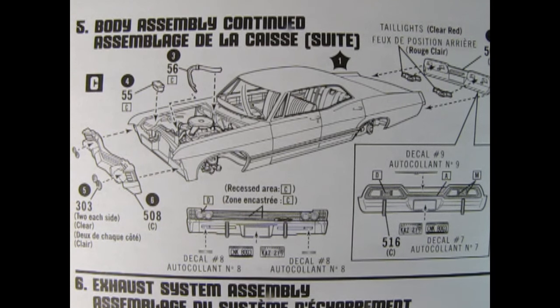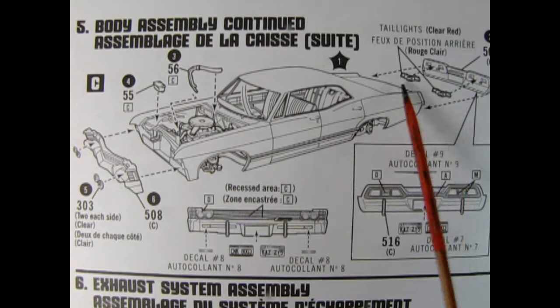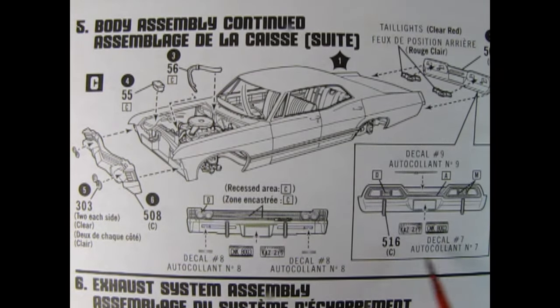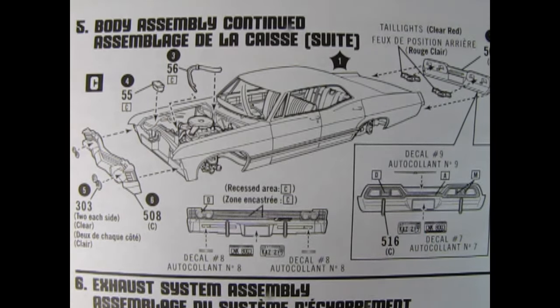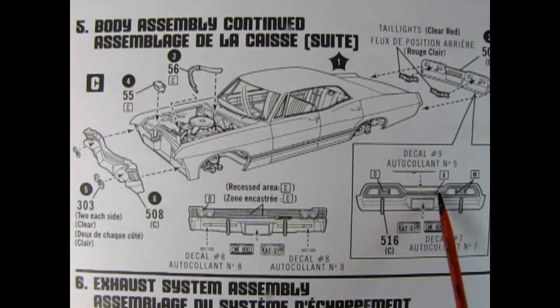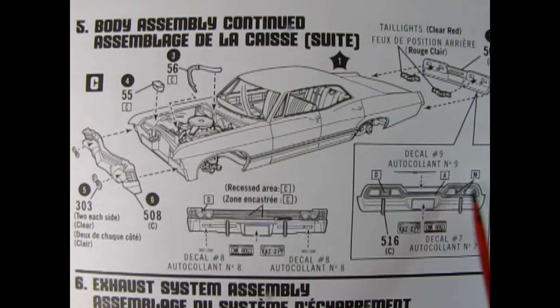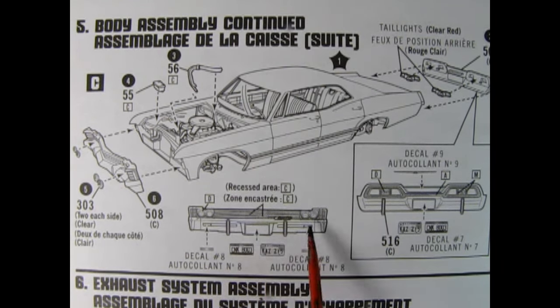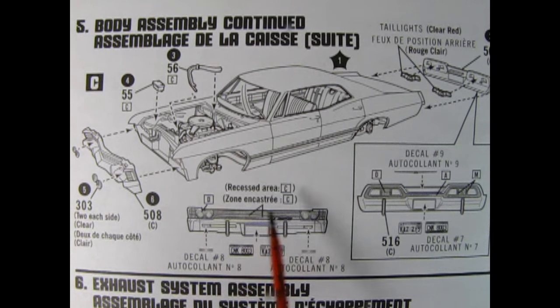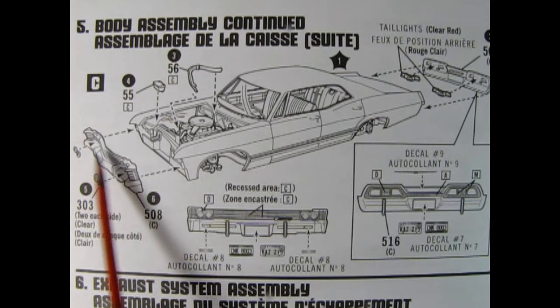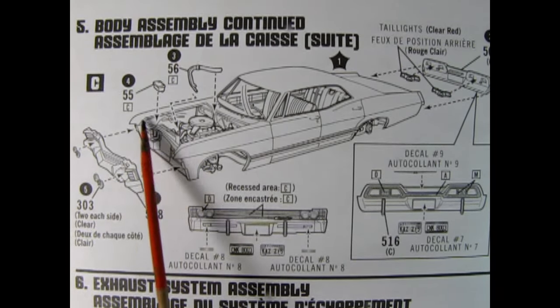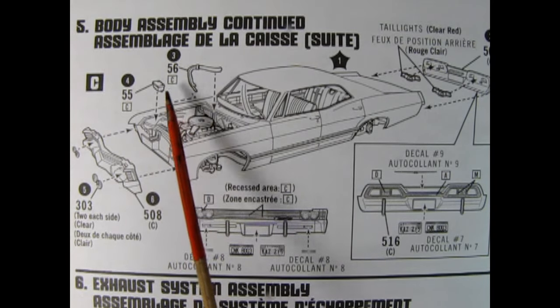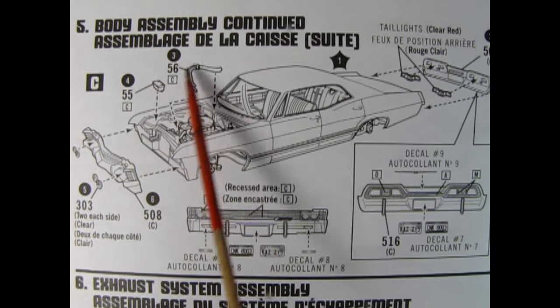Step five, body assembly continued. We continue on with our body assembly by putting in the rear tail lights into the bumper. Here we have our choice of which license plate decal we want to install as well as the Chevrolet emblem. We also have our paint callout for the rear tail lights as well as the backup lights. Up front we have the front grille with your choice of license plate and different decals. We have our clear headlights being glued into the headlight bezels and the front bumper gets glued up here onto the front of the fenders. We also have our windshield wiper bottle and the heater hoses.